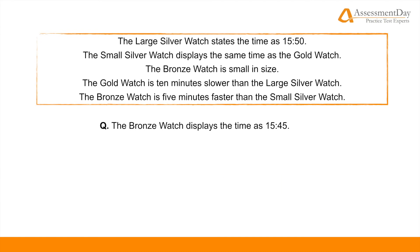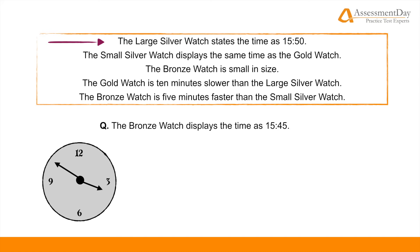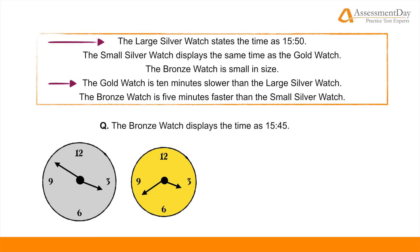Now let's go through the premises carefully. The large silver watch states the time as 1550. We can use this as a starting position from which to assess the other premises. I've given a visual representation. The best thing to do here is to look at a premise that uses the large silver watch variable so we can build on our logical conclusion. The gold watch is 10 minutes slower than the large silver watch, so the gold watch displays the time as 1540. Continuing this variable chain, the small silver watch displays the same time as the gold watch, so the small silver watch displays the time as 1540 also.